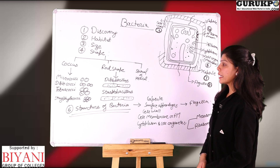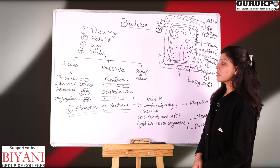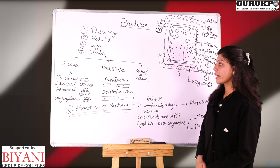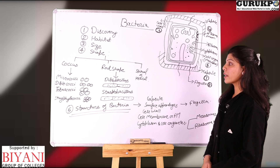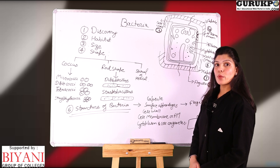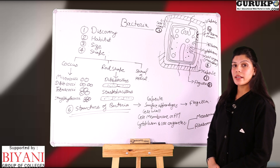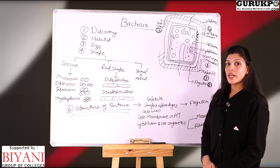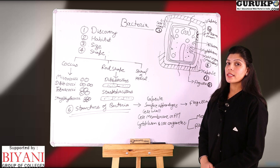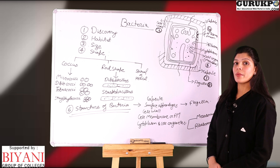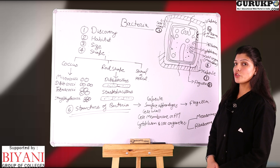Second type is rod shape bacteria. These bacteria are elongated and cylindrical. Their main categories are diplobacillus, when bacterias are present in pairs, and streptobacillus, when bacterias are present in long chains.